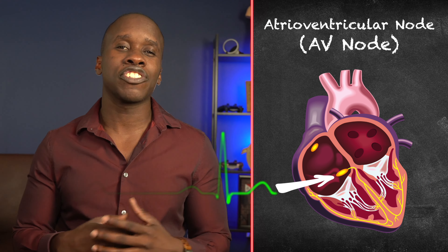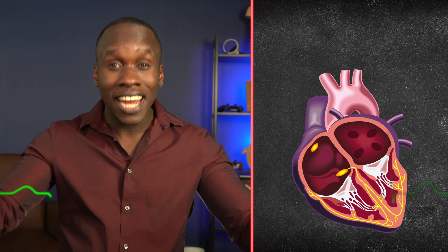Leading away from the AV node, we have a bundle of fibers called the bundle of His, which then leads to the left and right bundles, and eventually these little fibers called Purkinje fibers. All of these structures and fibers allow the signals that are generated to spread throughout the entire heart. The SA node and AV node are unique in that they have the ability to generate a signal.